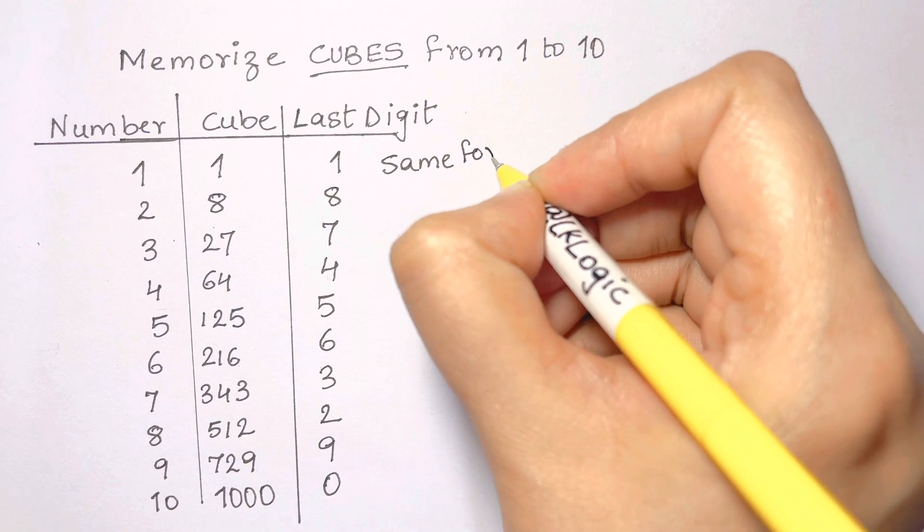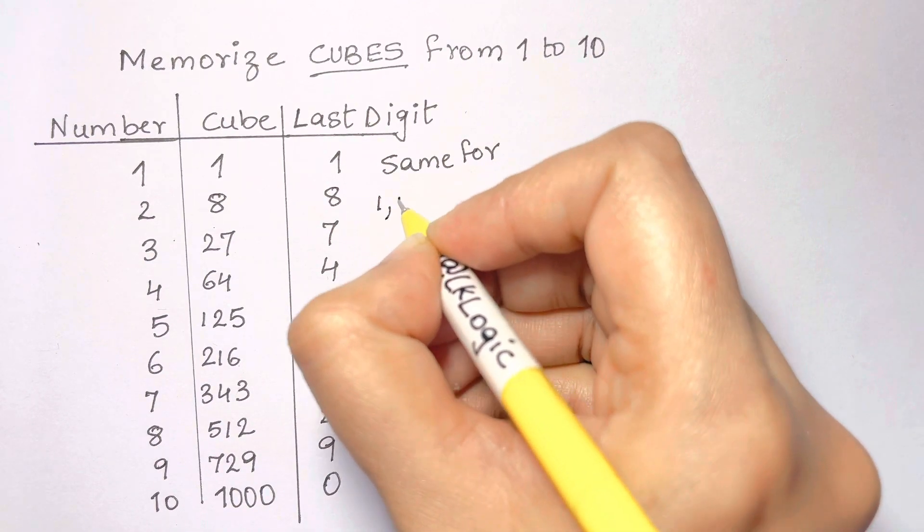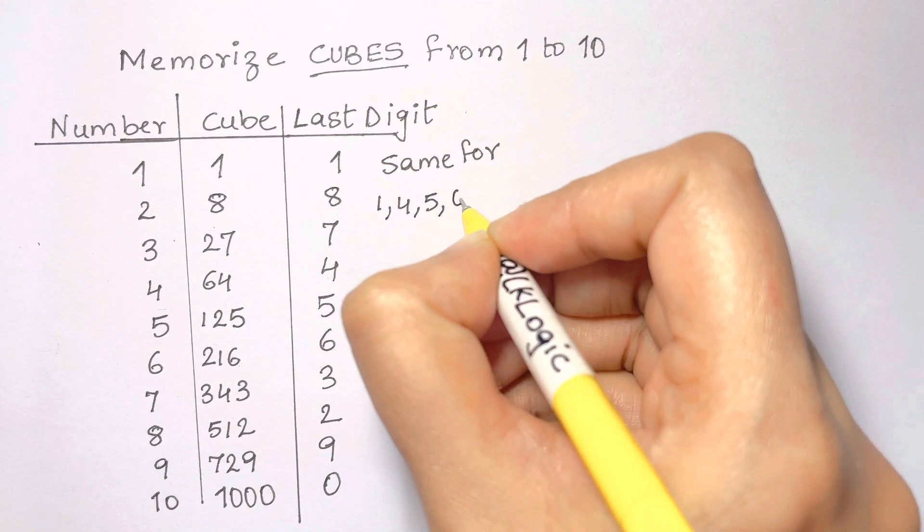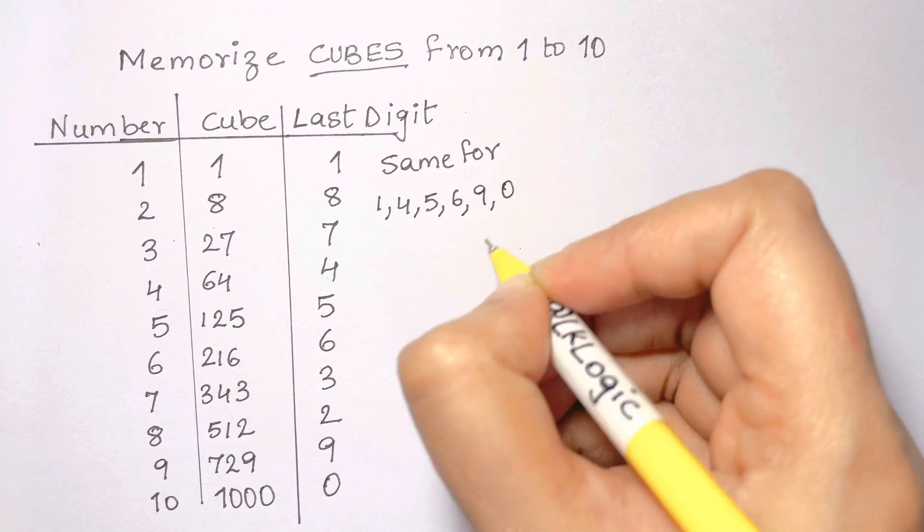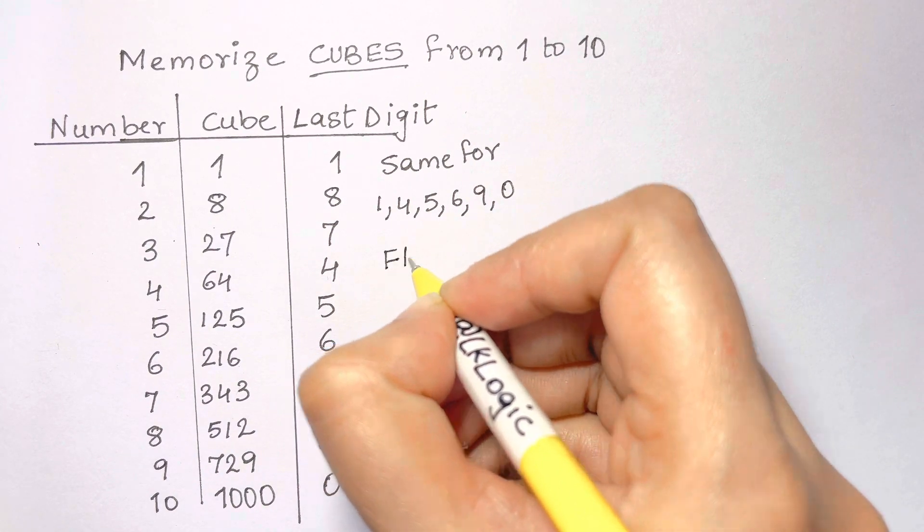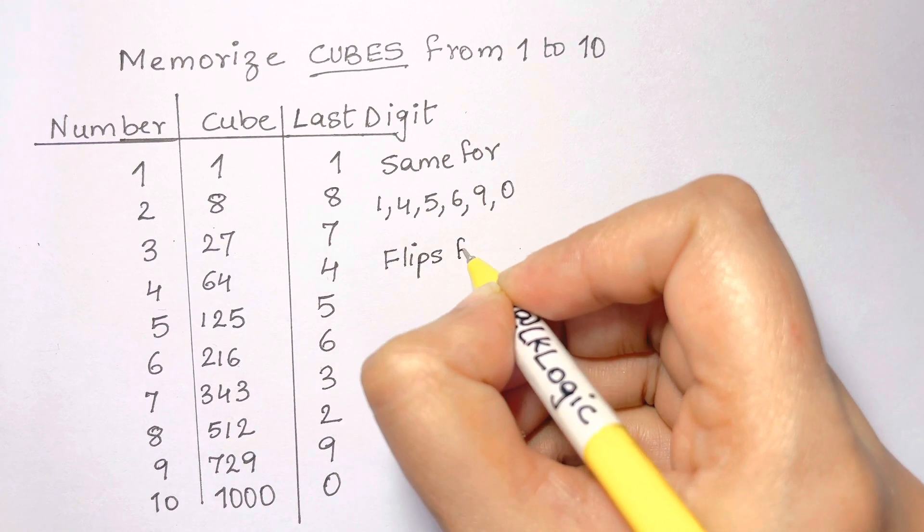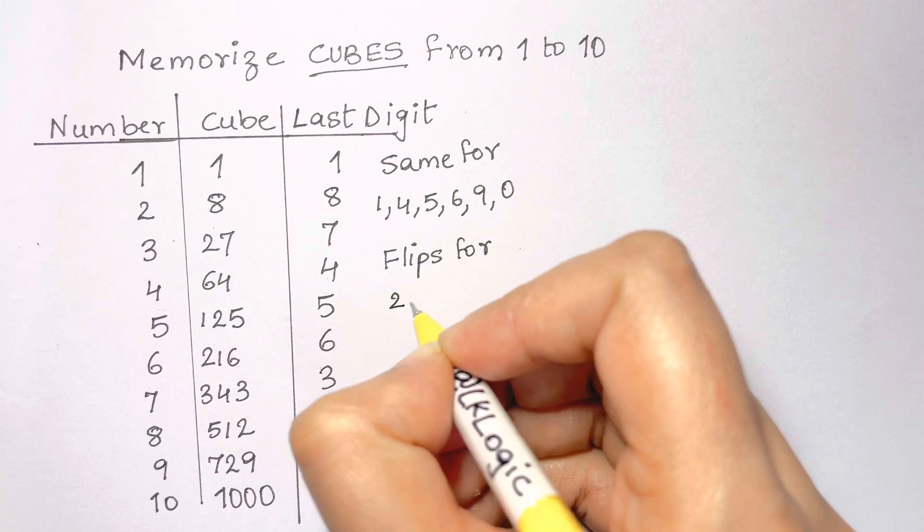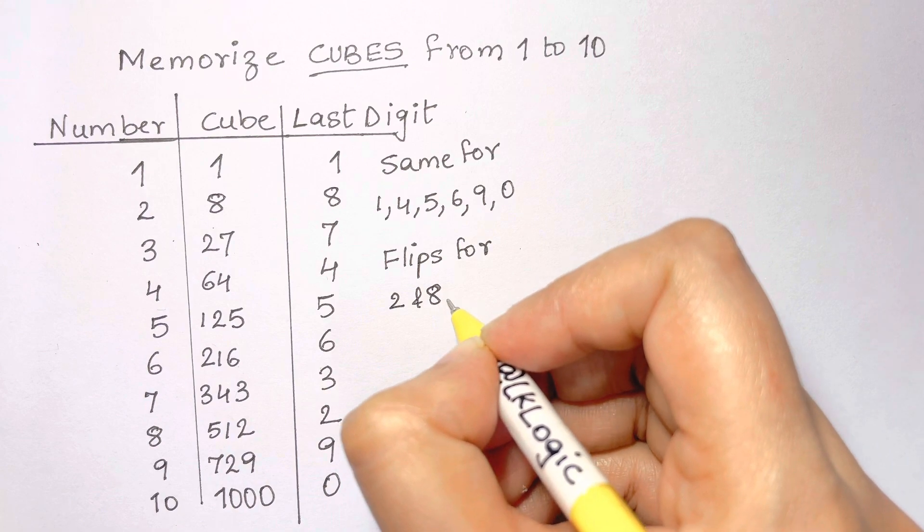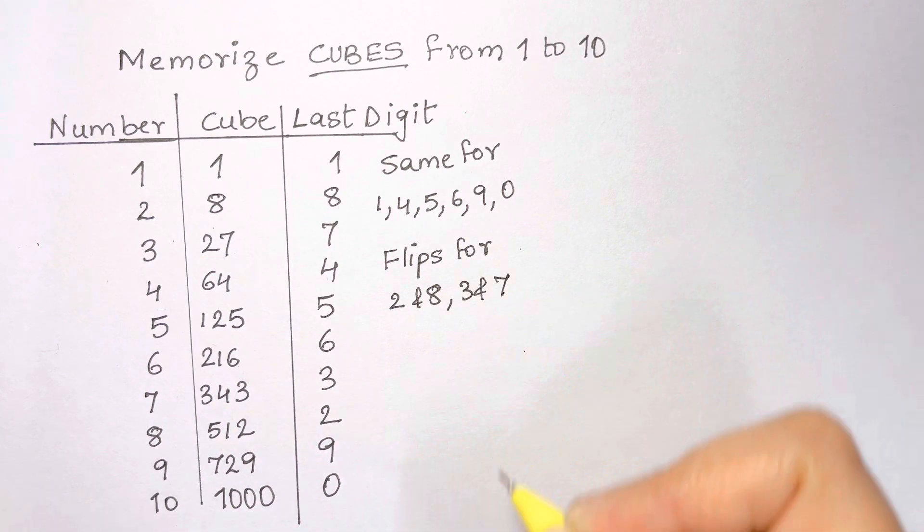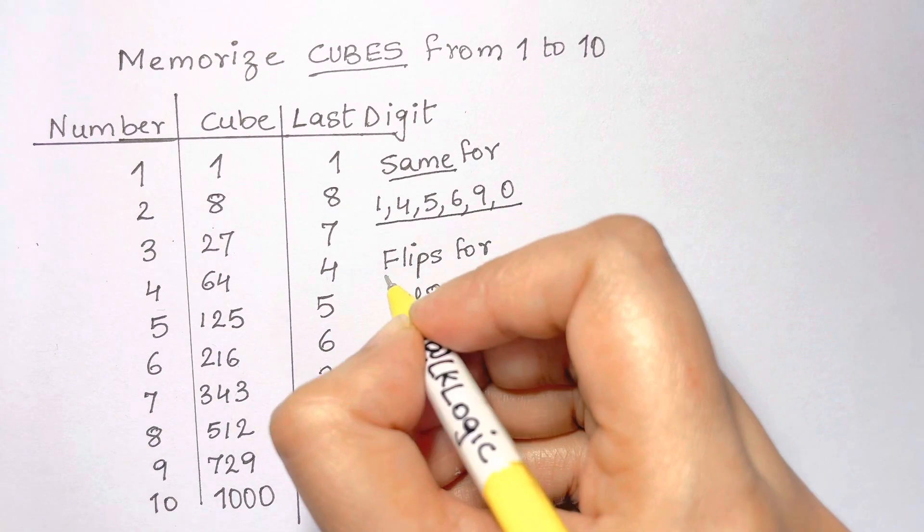So this will be another thing you have to memorize. When you memorize these 10 digits, you should also remember the last digit. An easy way to remember is that for the numbers 1, 4, 5, 6, 9, 0, the last digit is the same as the numbers. And for the numbers 2 and 8, 3 and 7, the last digit flips. So the last digit for 2 is 8 and the last digit for 3 is 7, and vice versa.